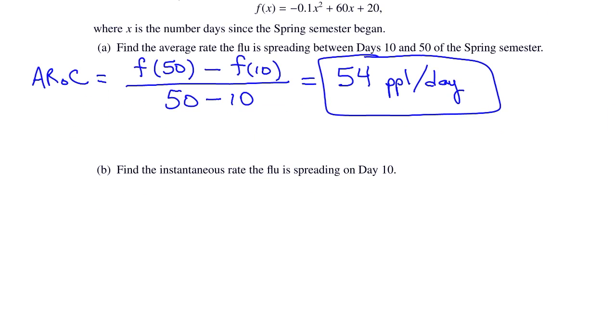Part B is find the instantaneous rate the flu is spreading on day 10. So the instantaneous rate of change is given by the derivative. I'll use the shortcut to find the derivative. You could do it the long way if you wanted to, but there's no need to do that here since we know the shortcut now.